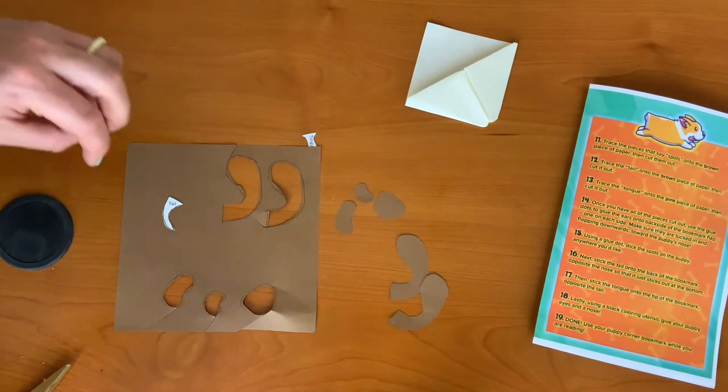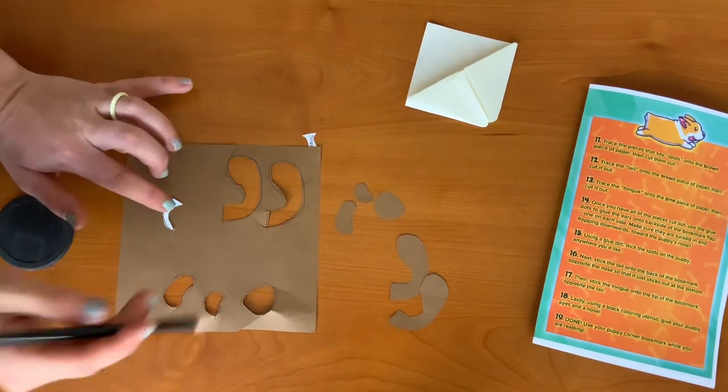Step 12, trace the tail onto the brown piece of paper and then cut it out.